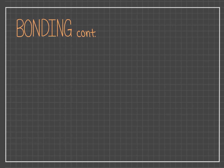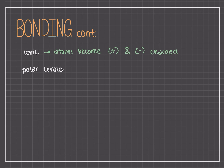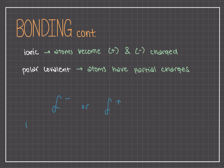In an ionic bond, atoms either become completely positively charged or completely negatively charged. For example, with NaCl, Na completely donates an electron to Cl, so Na becomes positive and Cl becomes negative. But in a polar covalent bond, both atoms still hold on to these electrons. That brings us to the idea of partial charges — an atom becomes either partially negatively or partially positively charged. We represent this with the lowercase Greek delta, where partial negative is drawn with a delta and a minus sign, and partial positive with a delta and a plus sign.